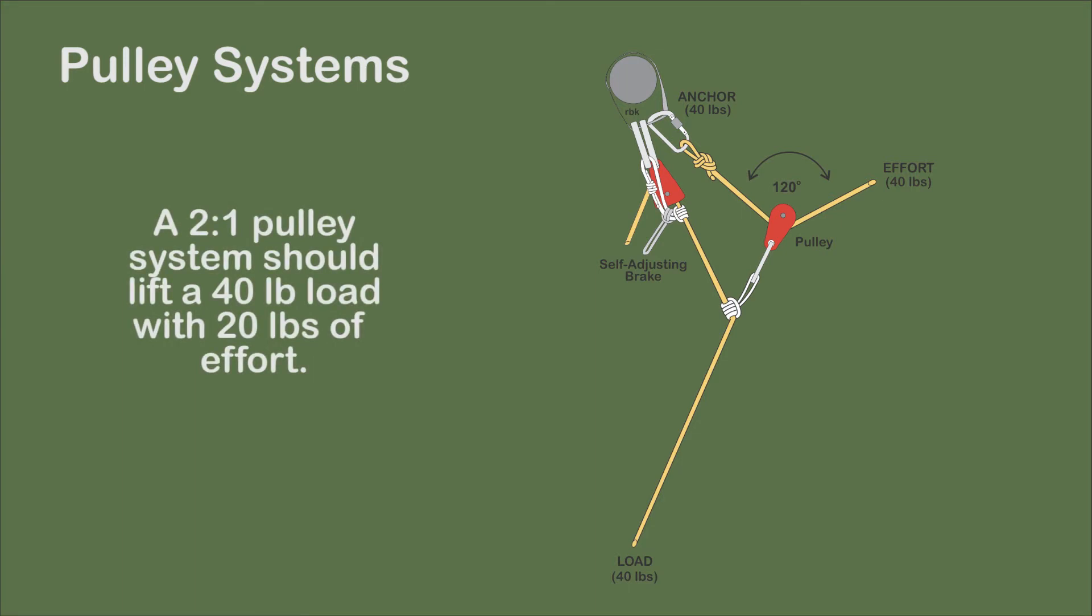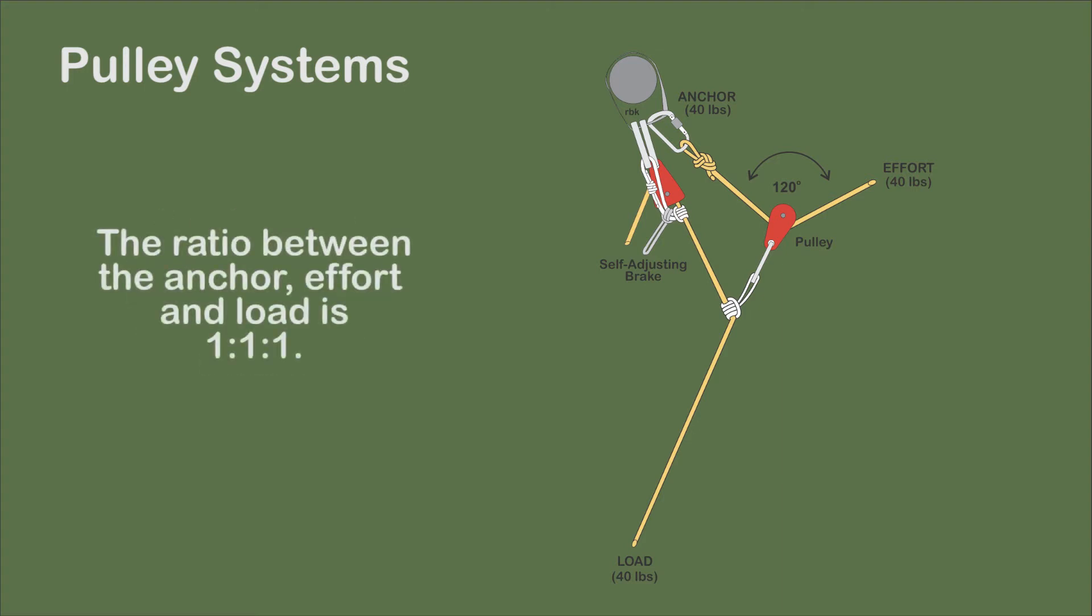Intuitively, when using a 2:1 pulley system, the effort should be half the load. A 20 pound effort should exert a 40 pound effort on the load, or twice the effort. However, this is not the case when the angle is 120 degrees.